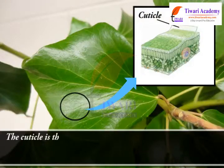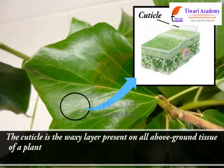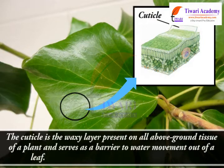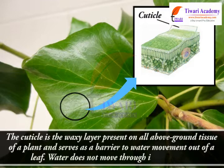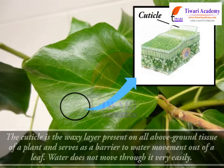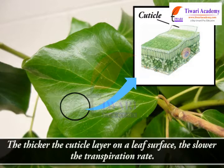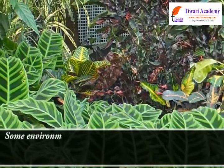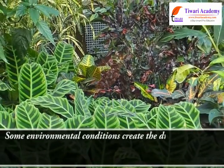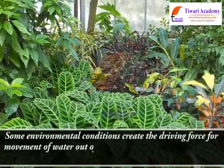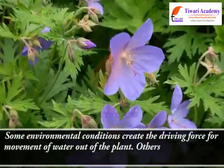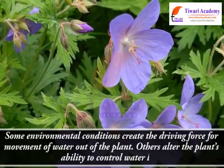The cuticle is the waxy layer present on all above-ground tissue of a plant and serves as a barrier to water movement out of a leaf. Water does not move through it very easily. The thicker the cuticle layer on a leaf surface, the slower the transpiration rate. Some environmental conditions create the driving force for movement of water out of the plant, while others alter the plant's ability to control water loss.